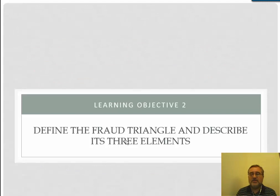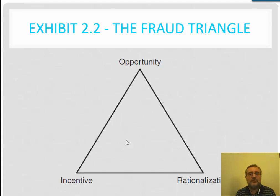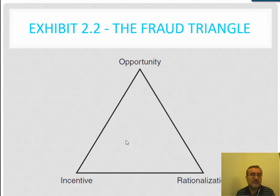We need to understand the background of fraud in order to understand what internal controls we need to establish. The key theory related to fraud is what we call the fraud triangle. The fraud triangle looks at fraud from the perspective of opportunity, incentives, and rationalization. The idea is that an employee or executive considers what they can get out of the transaction, how to justify the decision, and whether the opportunity exists due to a lack of internal controls.